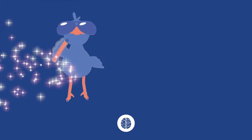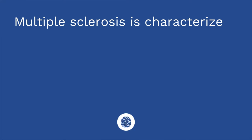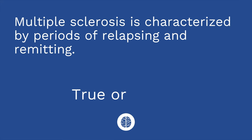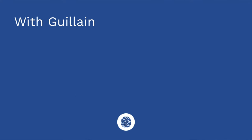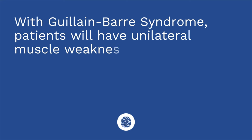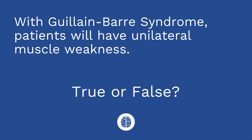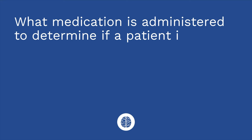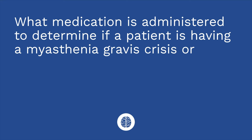All right, it's time for a quiz. Question number one: Multiple sclerosis is characterized by periods of relapsing and remitting — true or false? The answer is true. Question number two: With Guillain-Barre syndrome, patients will have unilateral muscle weakness — true or false? The answer is false; they will have symmetrical muscle weakness. Question number three: What medication is administered to determine if a patient is having a myasthenia gravis crisis or a cholinergic crisis? The answer is edrophonium.